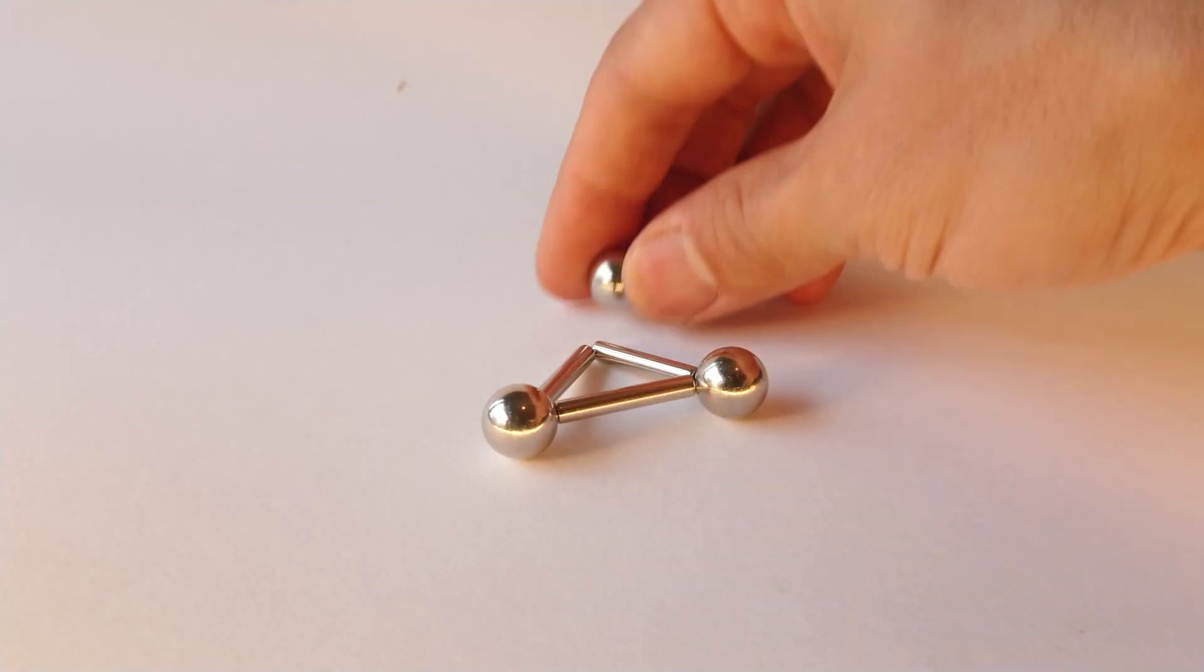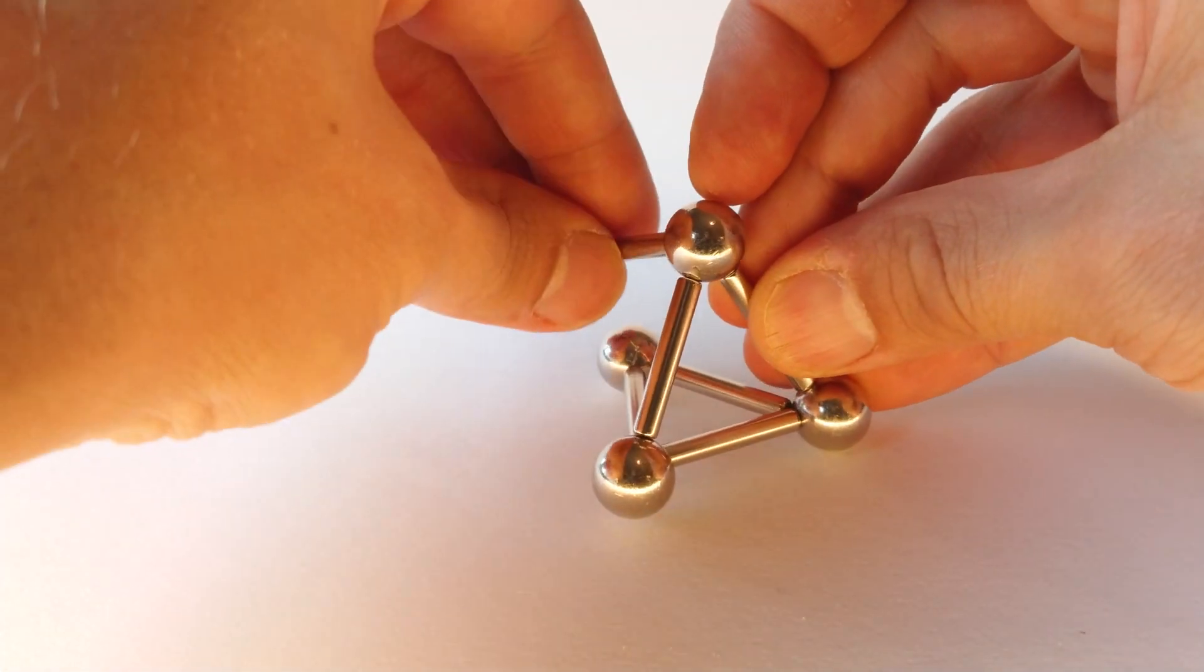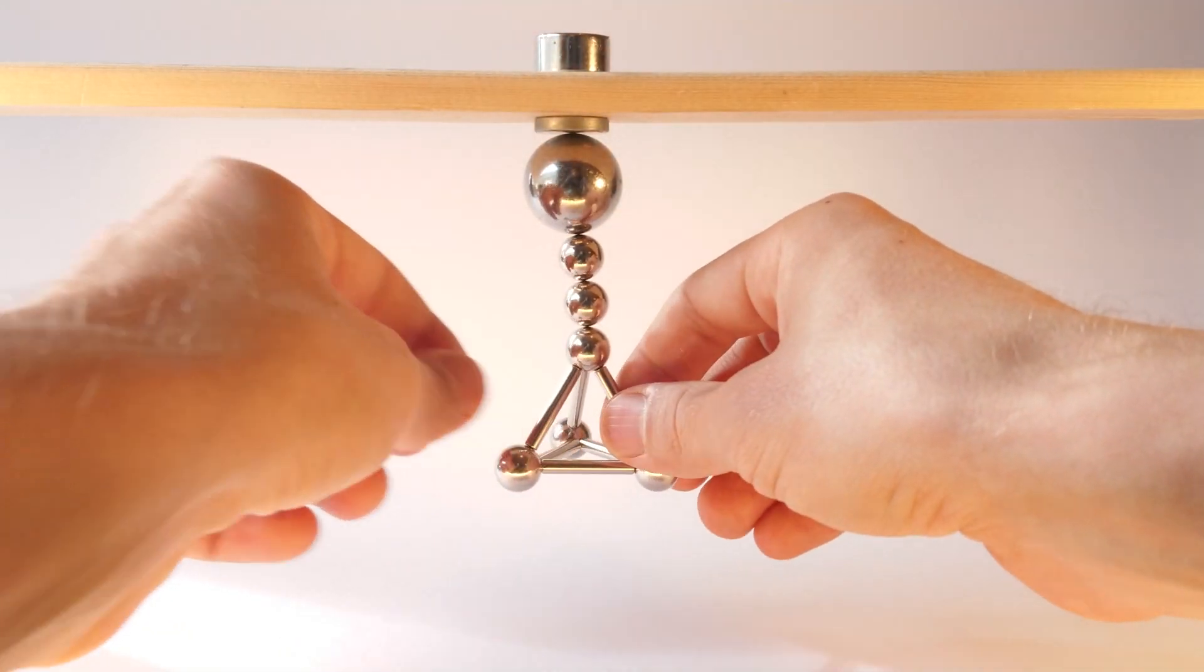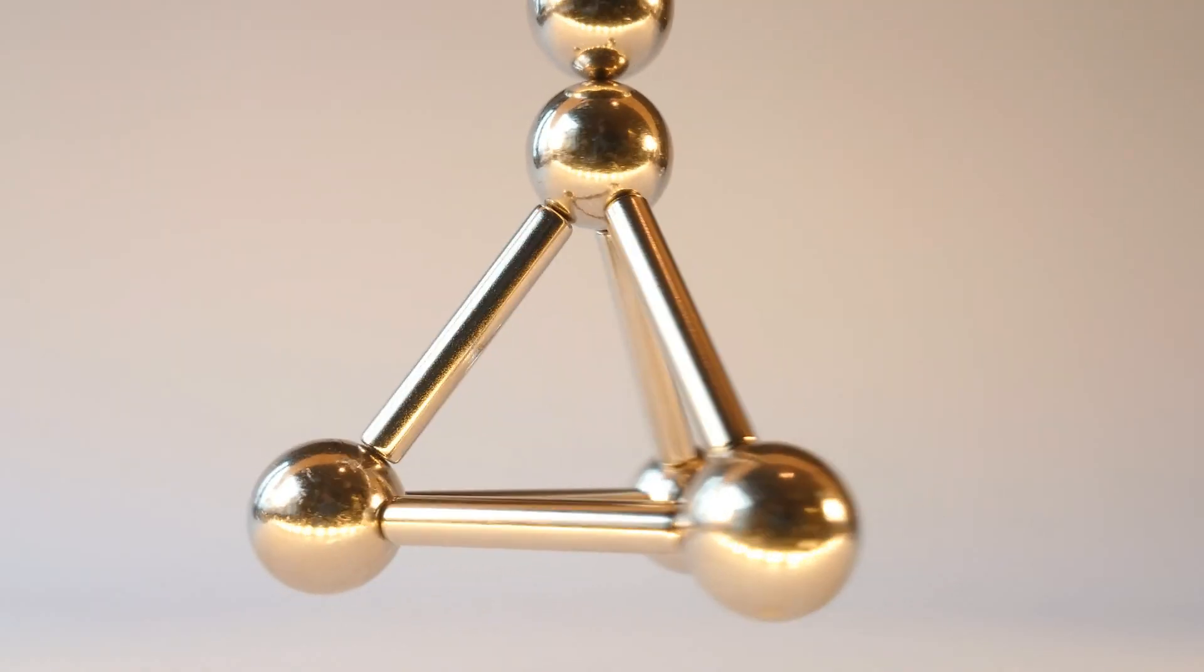A tetrahedron, also known as a triangular pyramid, is a polyhedron composed of four triangular faces, six straight edges and four corners.